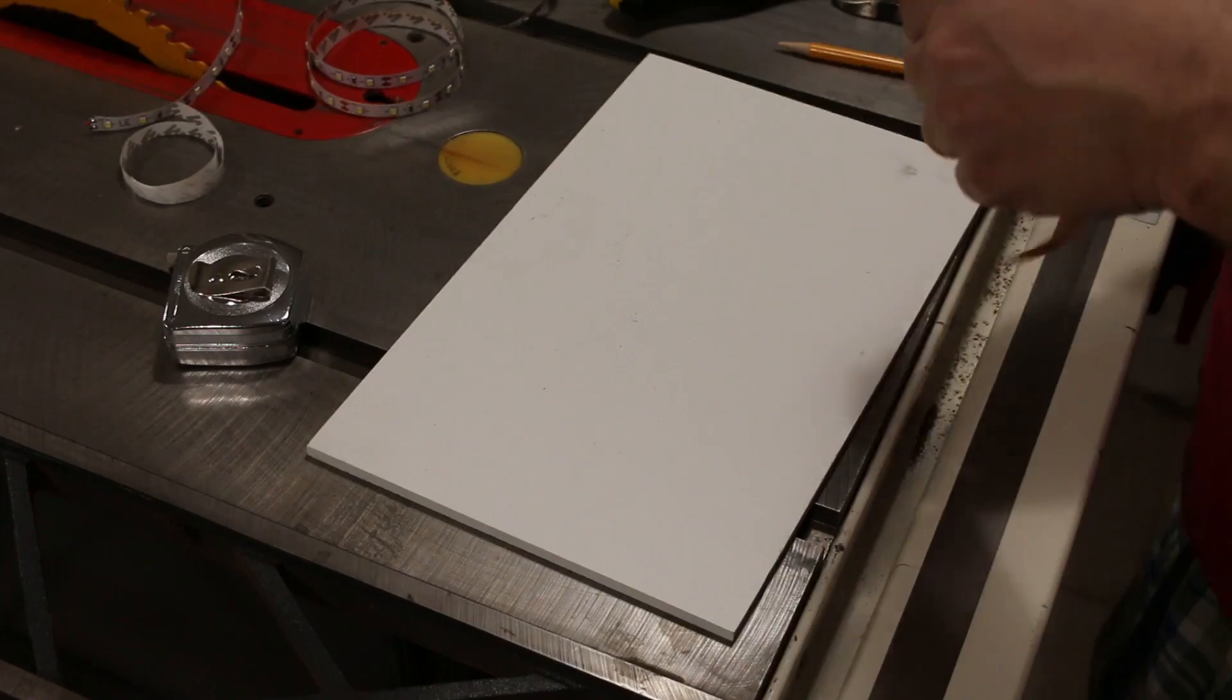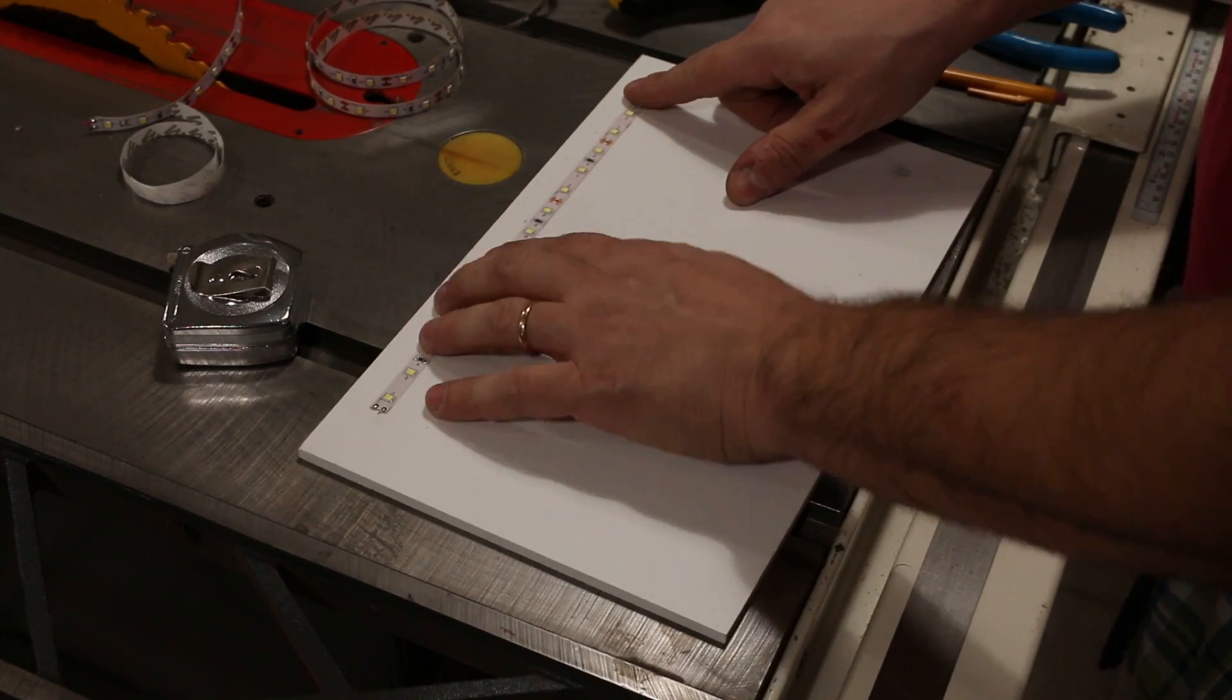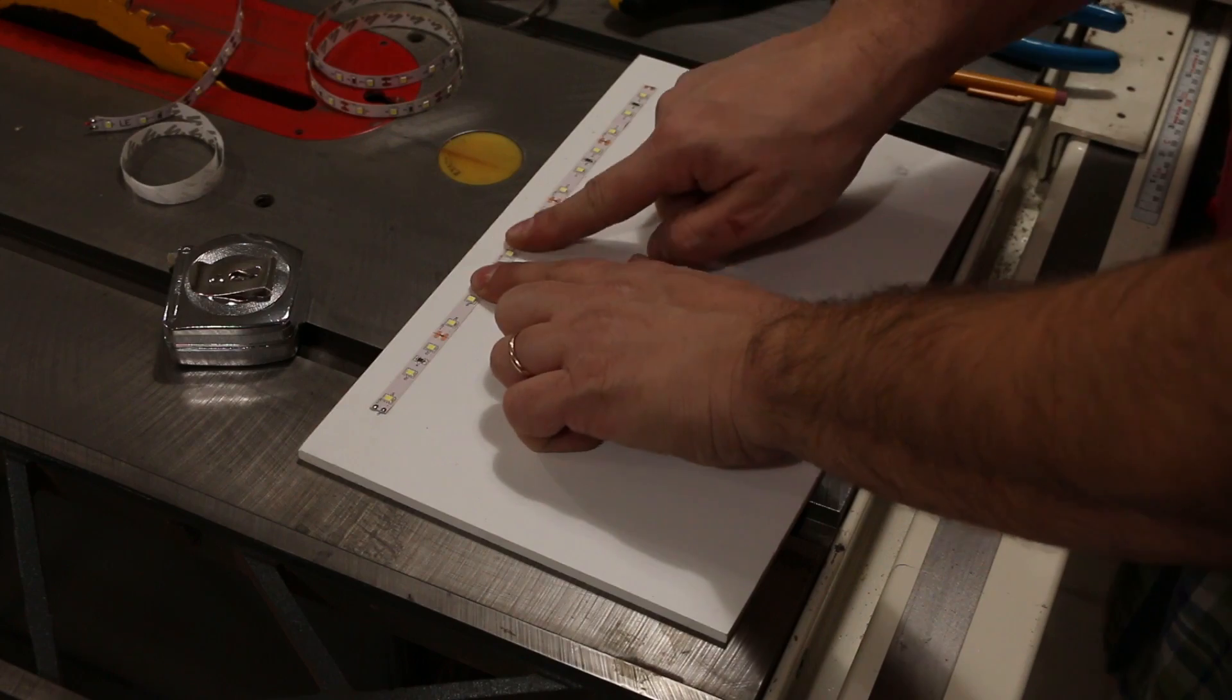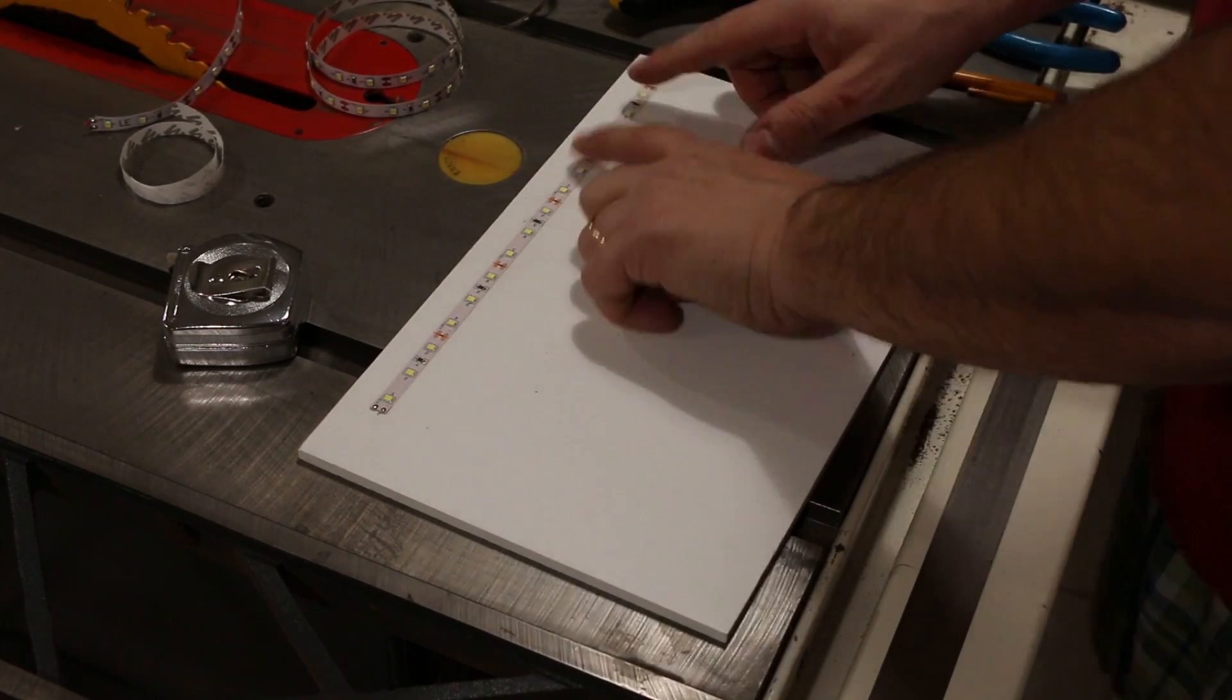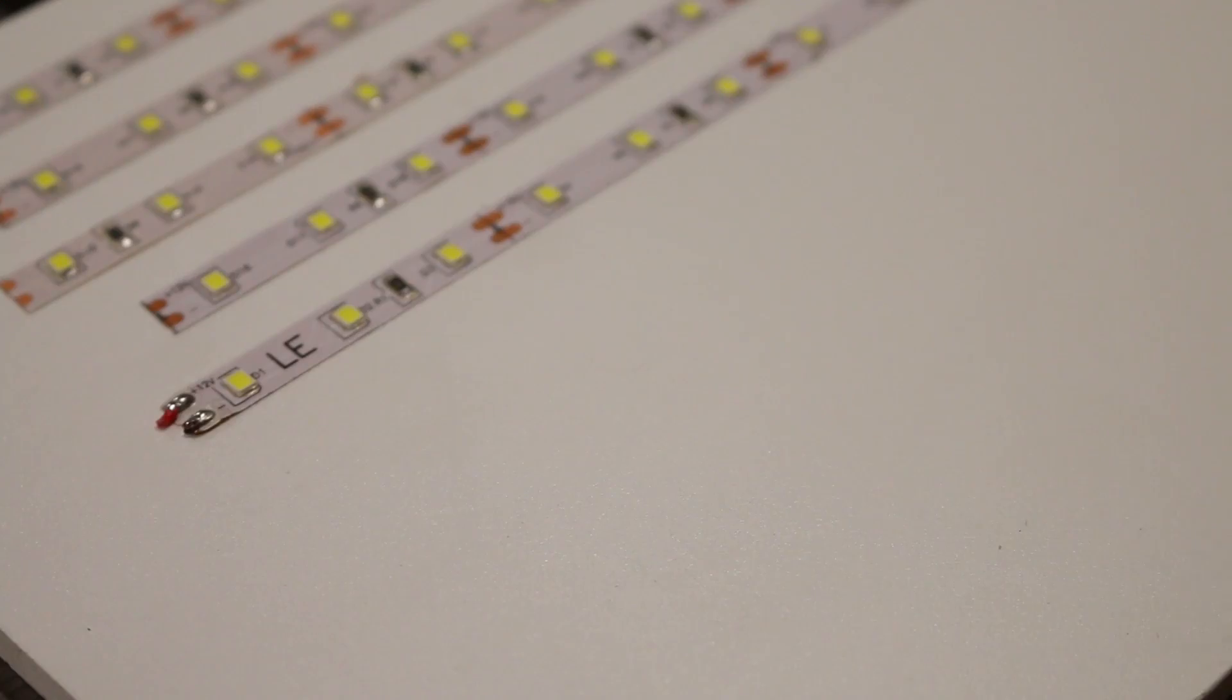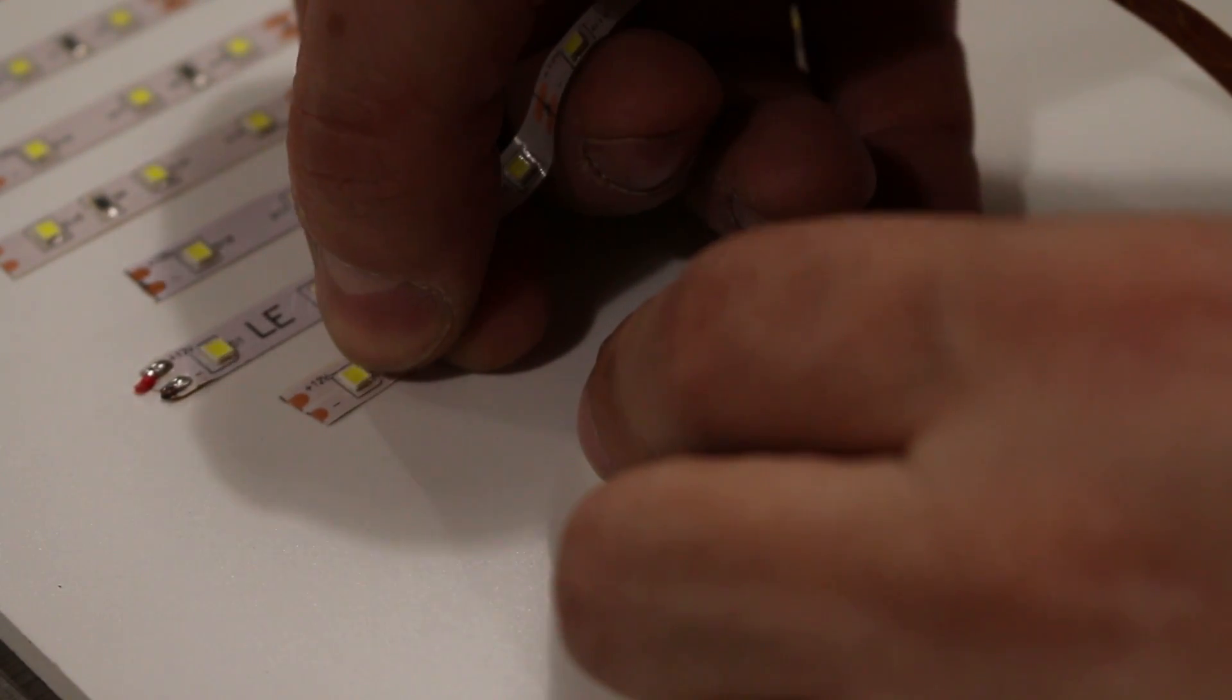Material I'm using for this build is called PVC foam board. This material can be purchased from plastic distributors. I got mine from Peterson Brothers Plastics in Chicago. I removed the protector from the adhesive backing and started to stick them to the foam board.